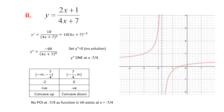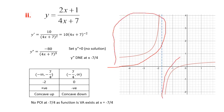Here's a graph to illustrate: there's a concave up section all the way to minus infinity, and the section to the right of the asymptote is concave down. The question asked where it was concave up, so the answer is (-∞, -7/4).